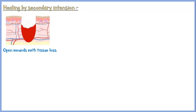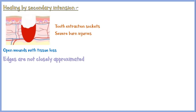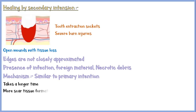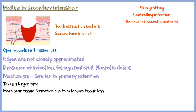Healing by secondary intention occurs in open wounds with significant tissue loss, such as tooth extraction sockets and severe burn injuries. Unlike ideal wounds, the edges of these wounds are not closely approximated, and sometimes the wound can be complicated by the presence of infection, foreign material, and necrotic debris. The mechanism of healing is more or less similar to primary intention, but it takes a longer time and there is more scar tissue formation. Skin grafting, controlling of infection, and removal of necrotic material may speed up the healing process.